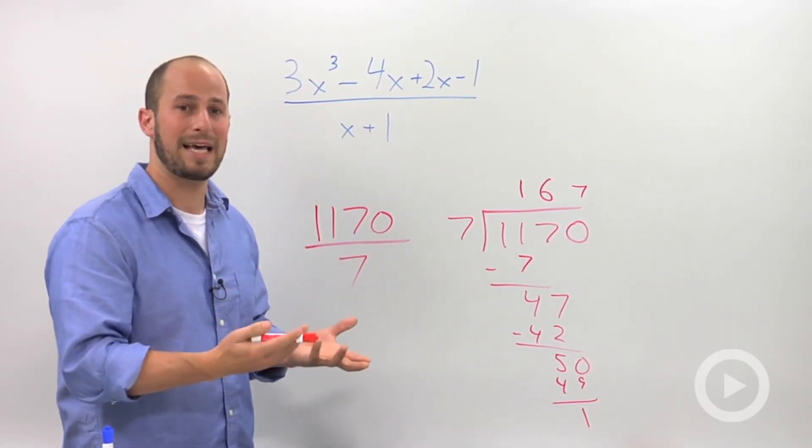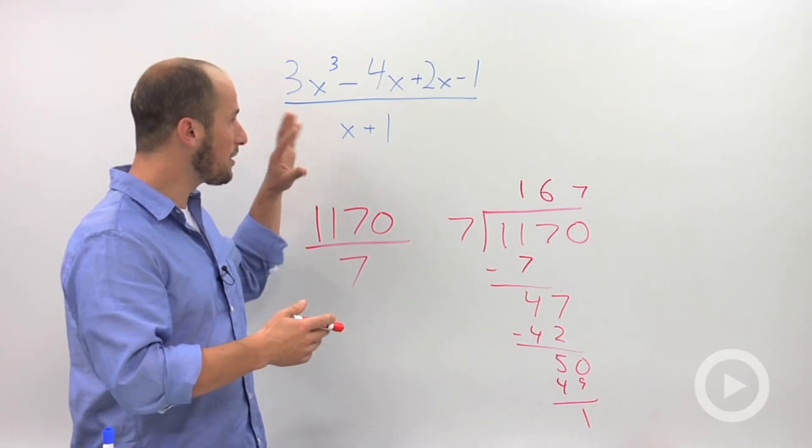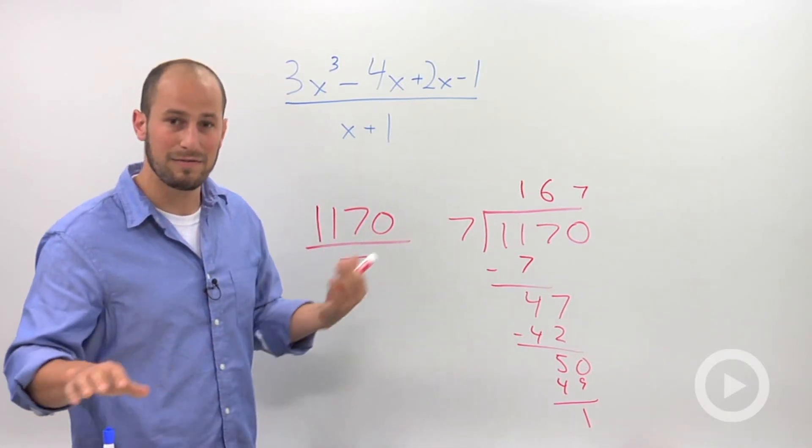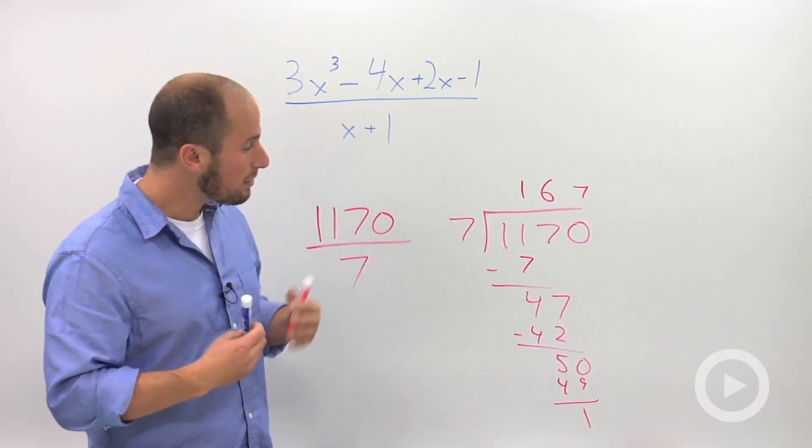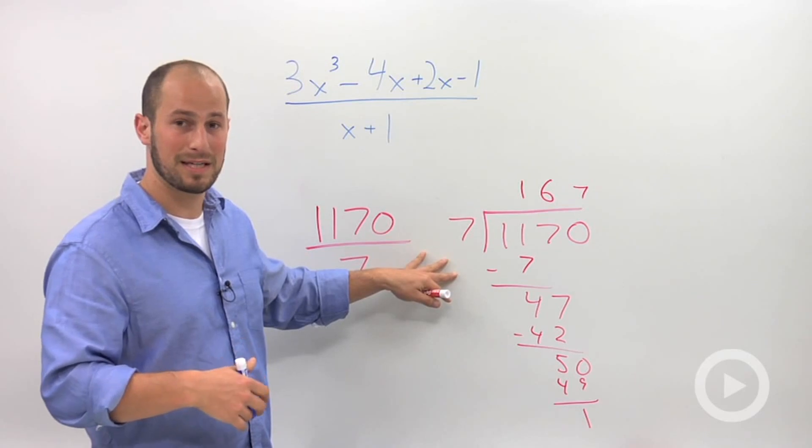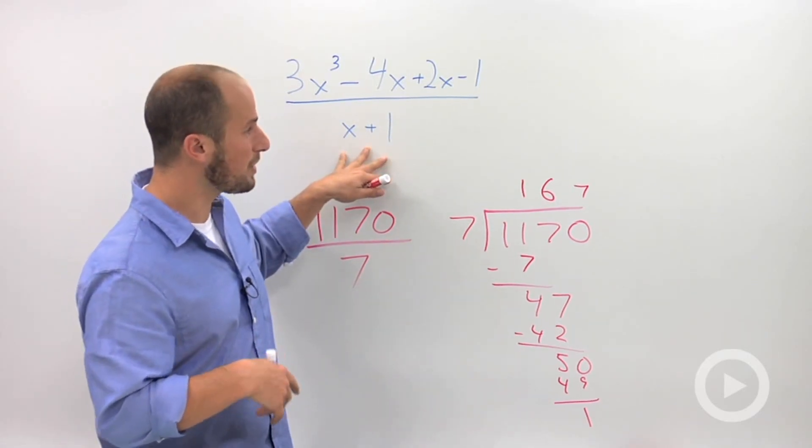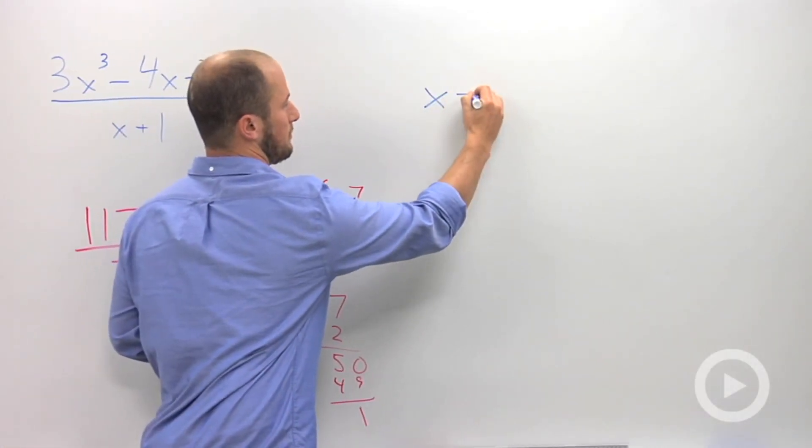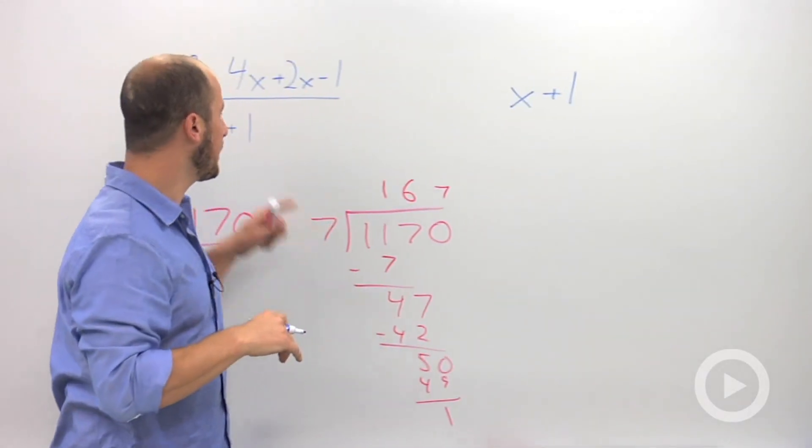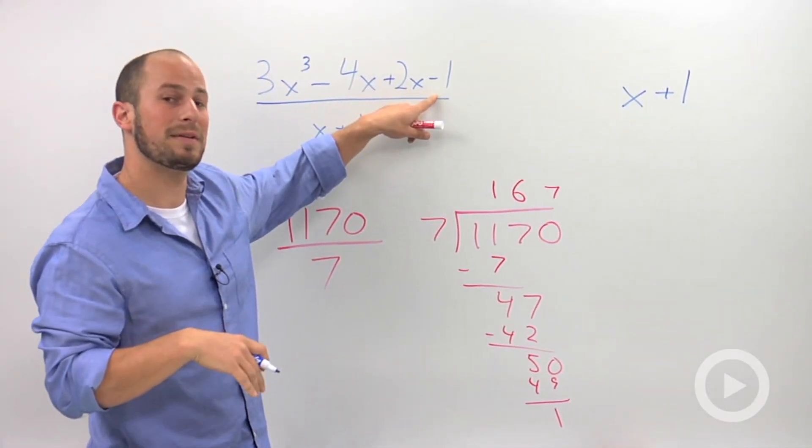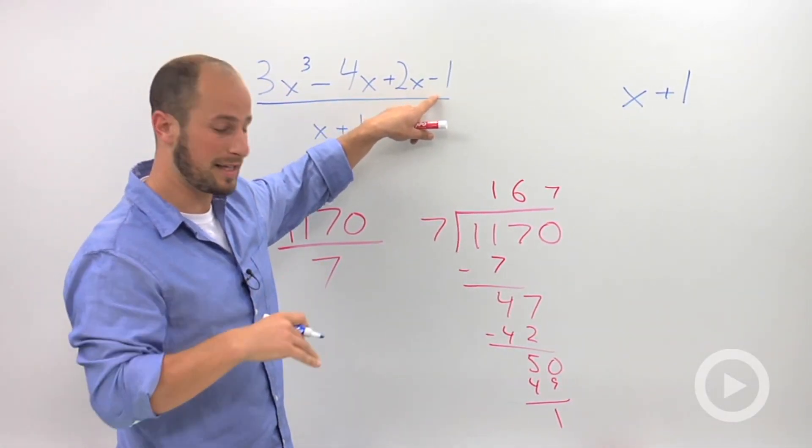Dividing polynomials is exactly the same idea, just with a little bit more x's and variables and terms involved. So what we're going to end up doing is exactly the same thing as this. Okay? So our x plus 1 goes on the outside. And then our, remember this is called the dividend, our dividend goes inside the bracket.